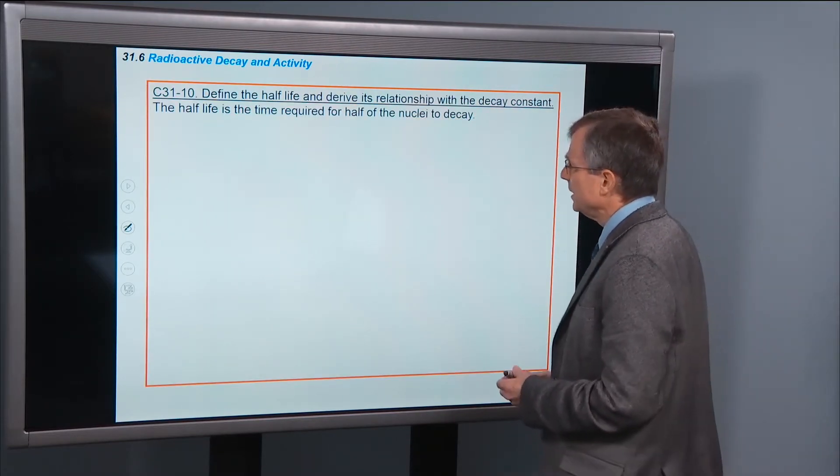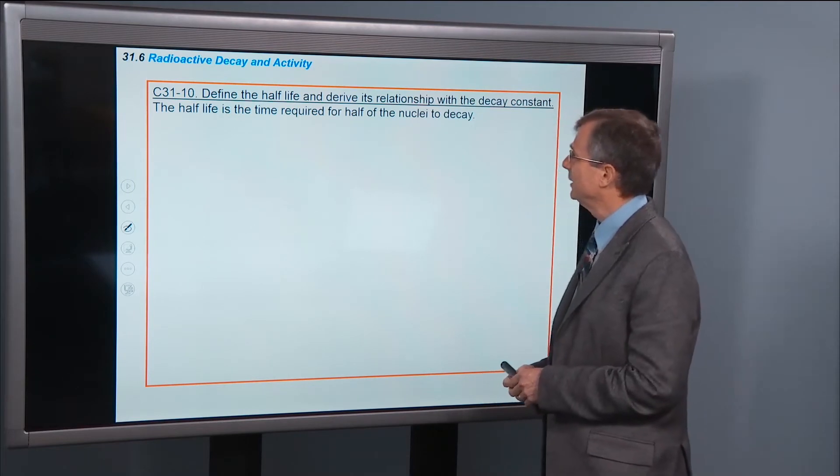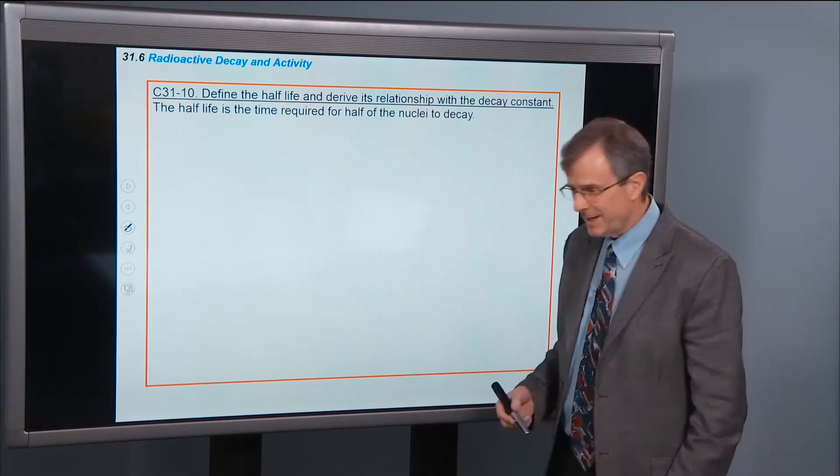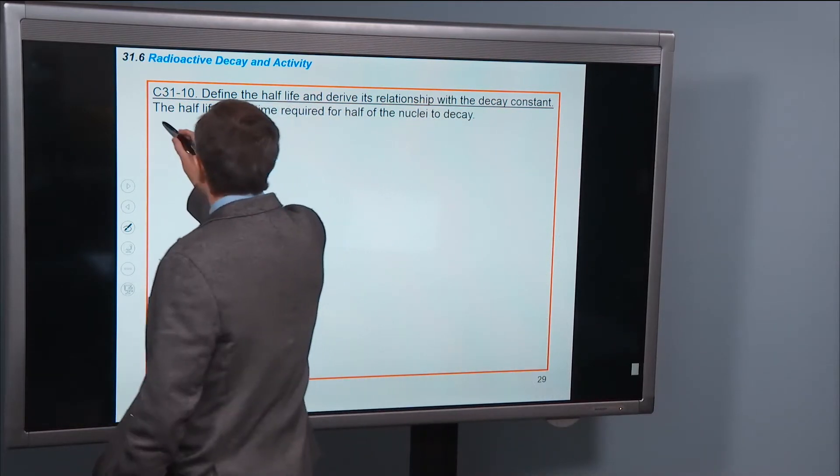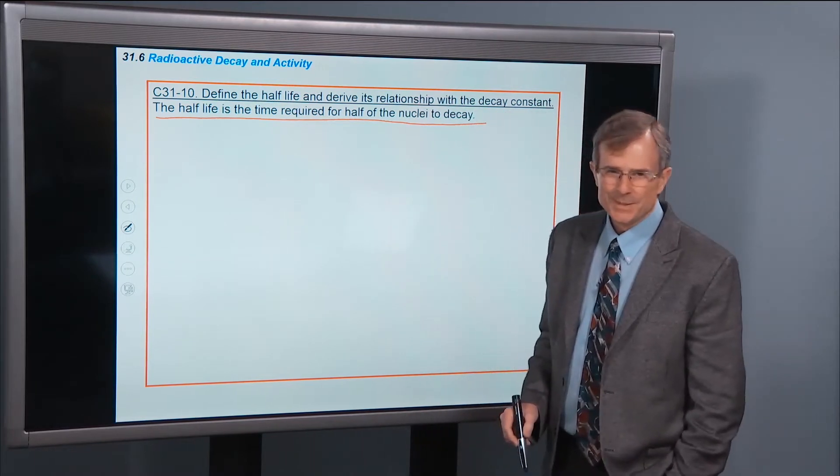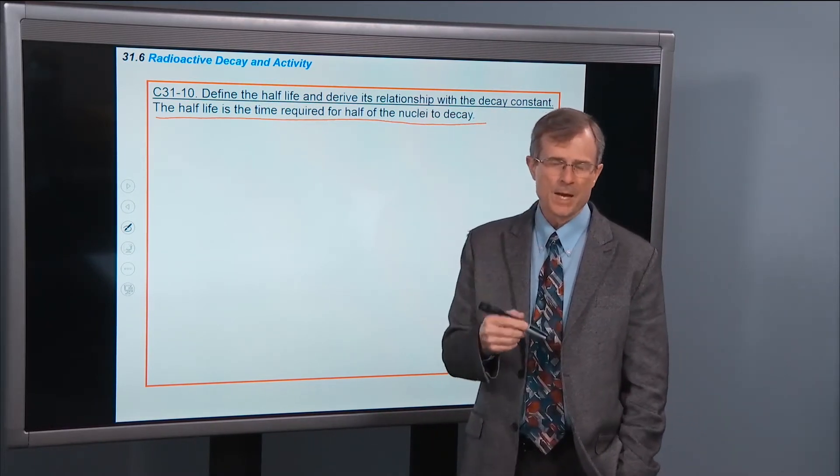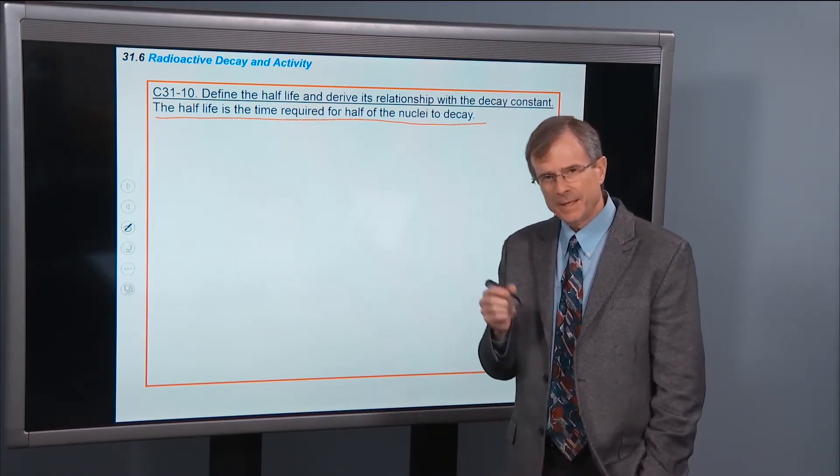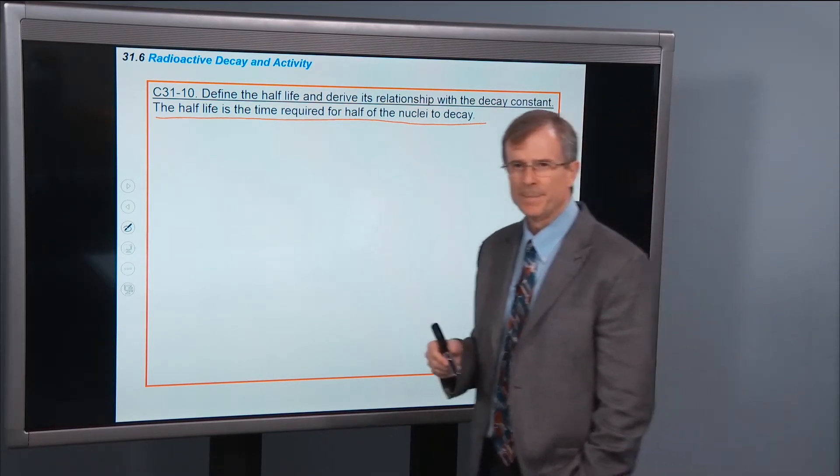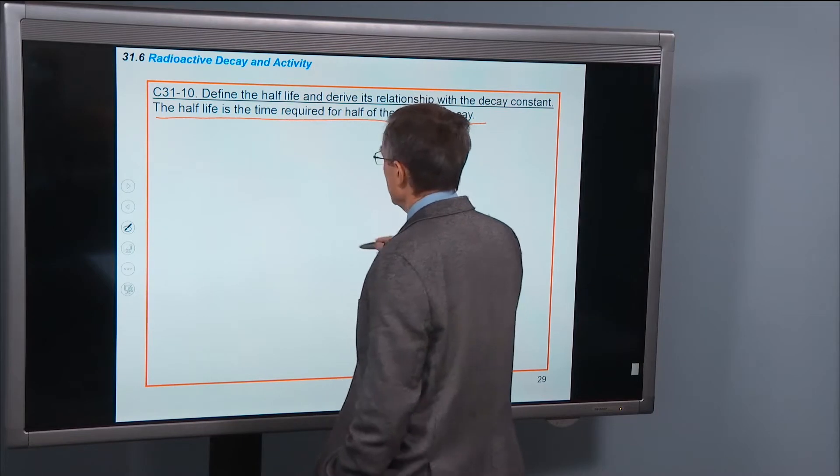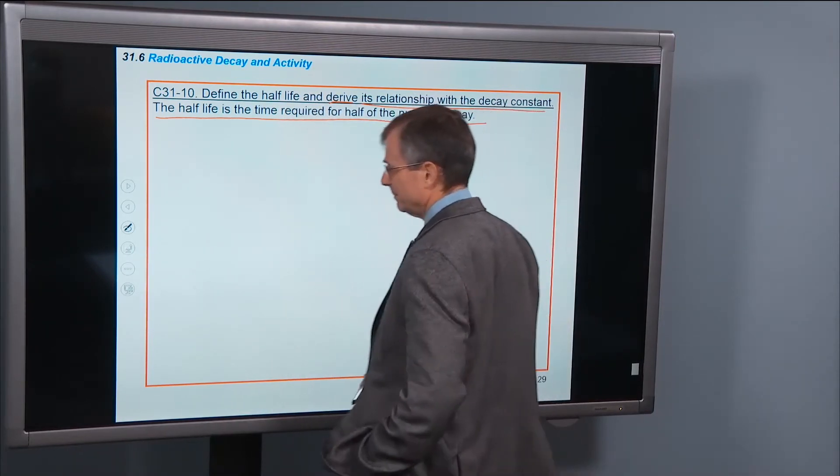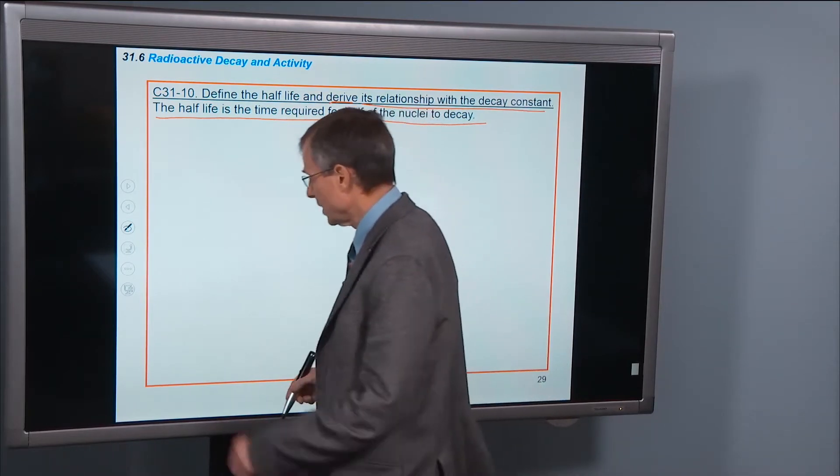So this concept is to define the half-life and derive its relationship with the decay constant. We've actually defined the half-life already. It's the time required for half of the nuclei to decay. So if we start off with n0 nuclei, then in a half-life we're going to get 1 half of n0. So the second half of this concept, after defining half-life, is to derive its relationship with the decay constant. Let's do that. It's not hard.